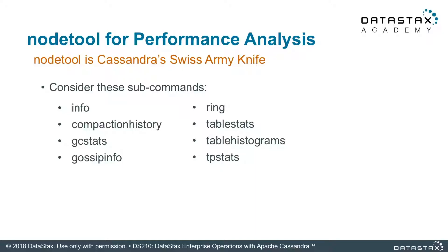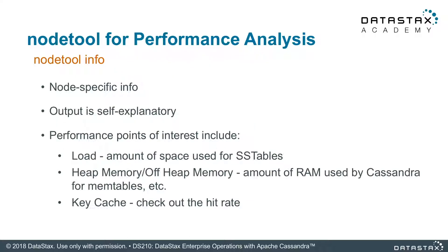Let's talk about nodetool for performance analysis. Nodetool has a lot of commands, and some of those commands are really good for trying to figure out what's going on with a bad node — a node having a bad day. Nodetool can come to the rescue. System performance tools show what's happening on the running node itself, but nodetool gives you insight into what's happening inside the running Cassandra node, which is really important whenever you're trying to do something subtle.